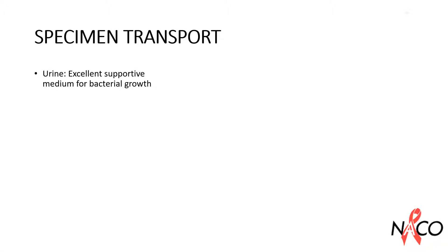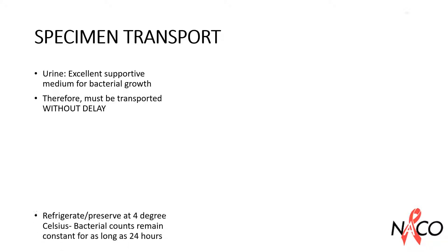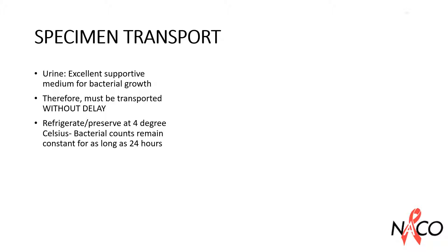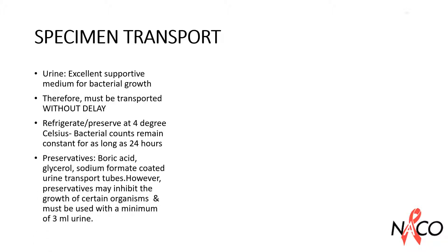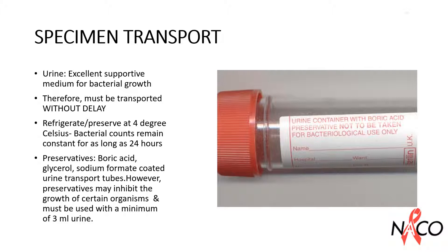Because urine is an excellent supportive medium for growth of most bacteria, urine must be immediately refrigerated or preserved. Bacterial counts in refrigerated urine at 4°C remain constant for as long as 24 hours. Urine transport tubes containing boric acid, glycerol and sodium formate have been shown to preserve bacteria without refrigeration for 24 hours when greater than 10 to the power 5 CFU per ml were present in the initial urine specimen. The system may inhibit the growth of certain organisms and must be used only if the quantity of urine is minimum 3 ml. Both boric acid products preserve bacterial viability in urine for 24 hours in the absence of antibiotics.